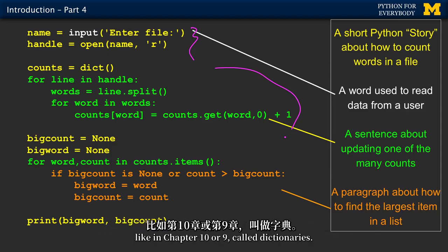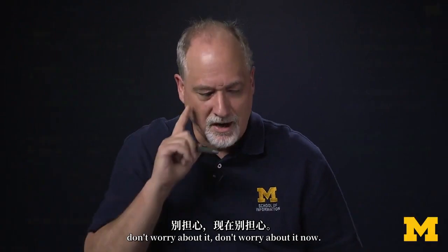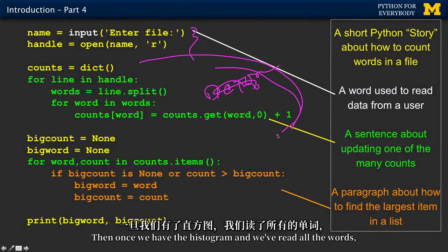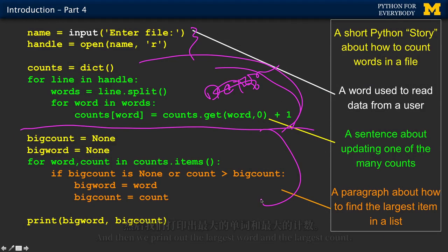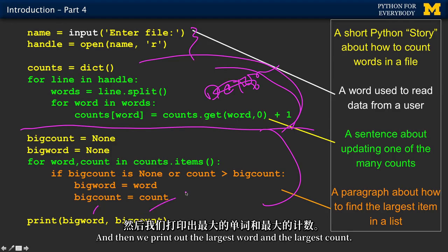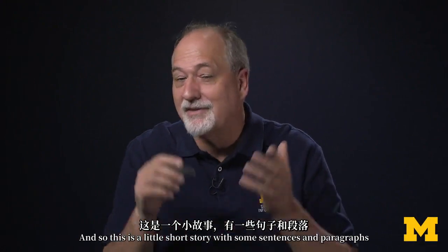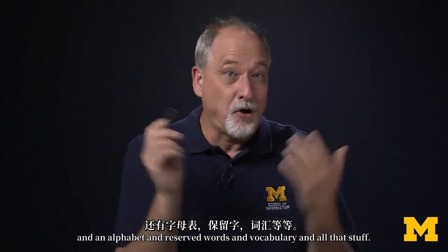Using a thing that we'll learn later, like in chapter 10 or 9, called dictionaries. Don't worry about it now. So this is making a histogram. Then once we have the histogram and we've read all the words, we read through the histogram to find the largest. Then we print out the largest word and the largest count. This is a little short story with sentences and paragraphs and alphabet and reserved words and vocabulary and all that stuff.